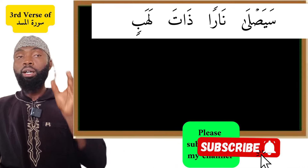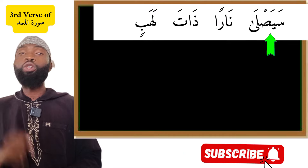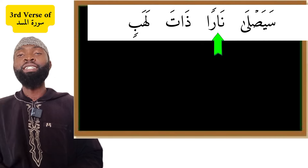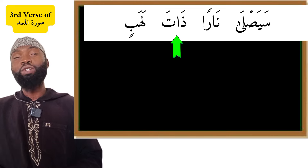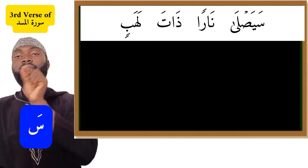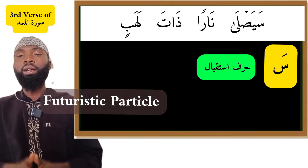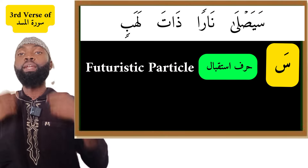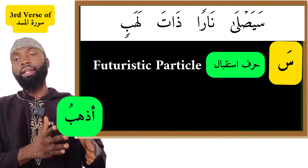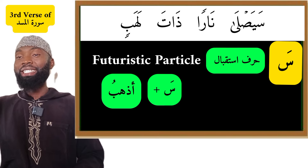Today we are going to look at specific explanations of each word. The first is the 'Sa', then we will talk about 'Yasla', then 'Naron' which means fire, then 'Dhata', and lastly 'Lahabun'. Let's begin with the first word, the 'Sa'. This is called harfu istiqbal, which means a futuristic particle. This particle is used with the present tense when we want to talk about the future. For example, 'adhabu' means I am going — if I want to say I will go, I bring the futuristic particle.